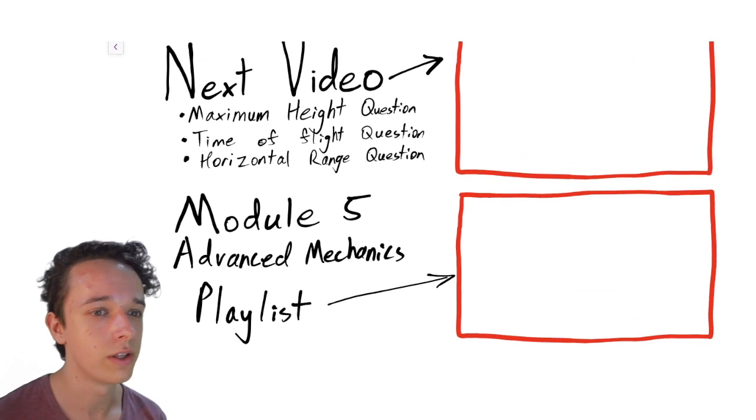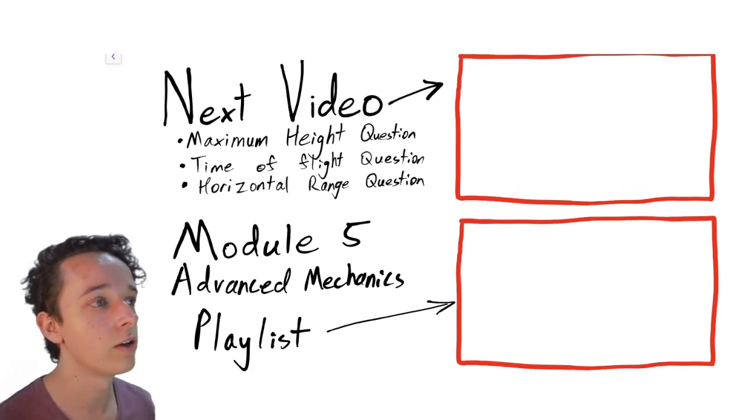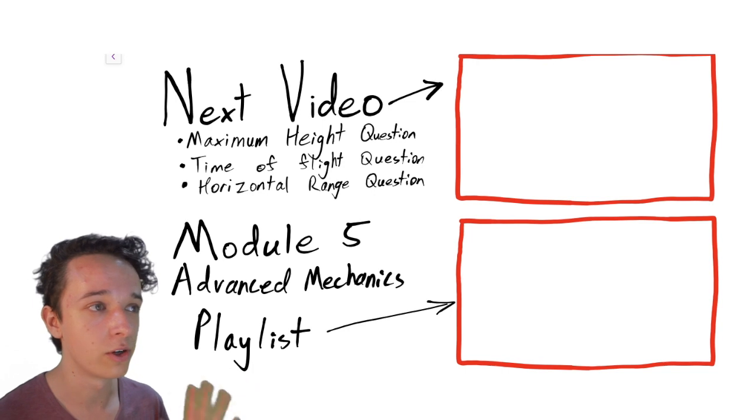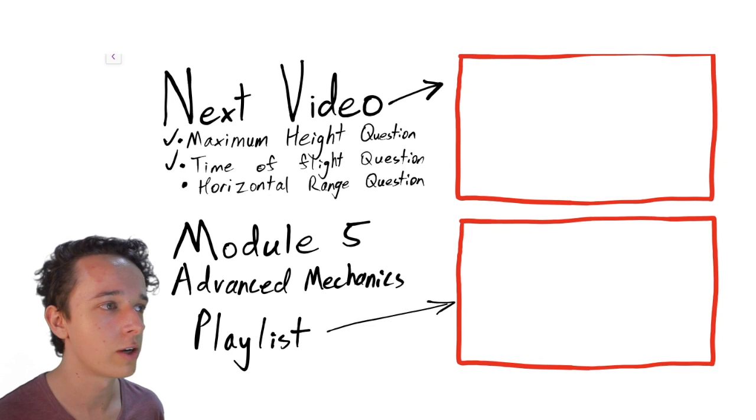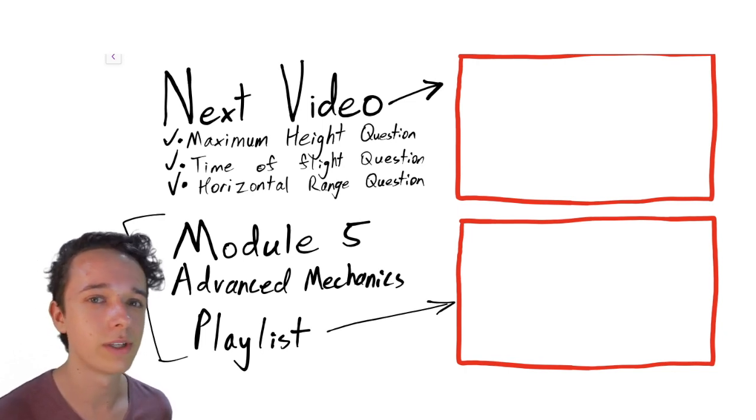Okay, so that was a brief introduction to the theory for projectile motion in HSC physics. In the next video, I go through the three most common quantitative questions that you'll get on projectile motion, those being maximum height questions, time of flight questions, and horizontal range questions. And then down here, I've got a playlist with all the videos for module five advanced mechanics. So good luck, and I'll see you in the next video. Bye.